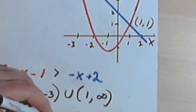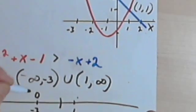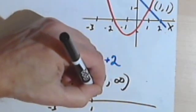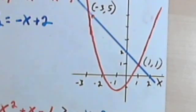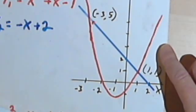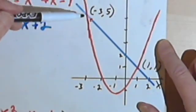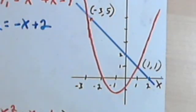On a number line, I'll mark where negative 3 and 1 are and put open circles at both, because we don't include either one. I go from negative 3 down to negative infinity, and up from 1 to positive infinity. All the numbers on that number line — which are all the numbers on my x-axis that make the quadratic part, this red parabola, greater than — higher up than — the linear part, the blue line. And that's about it. Take care, I'll see you next time.